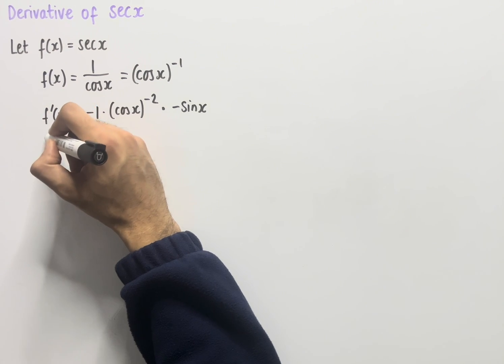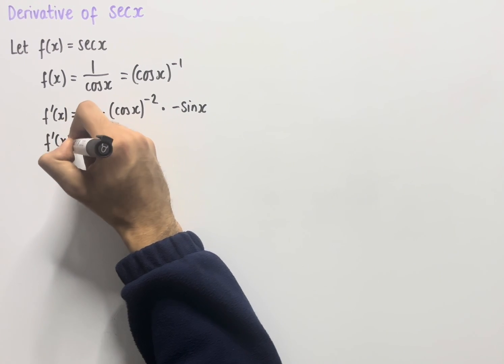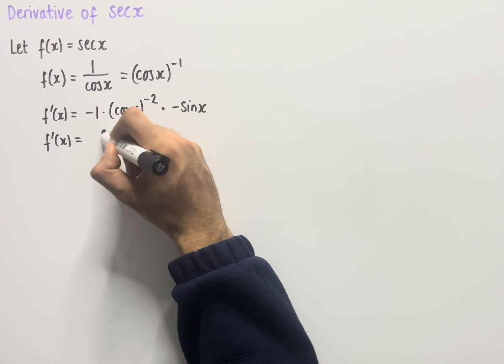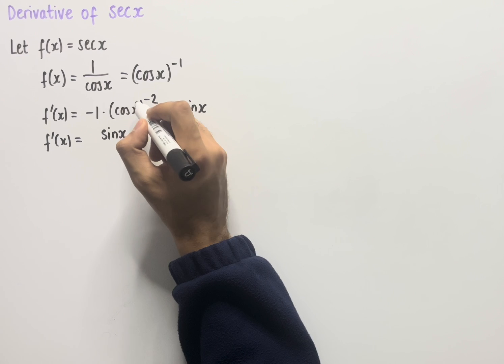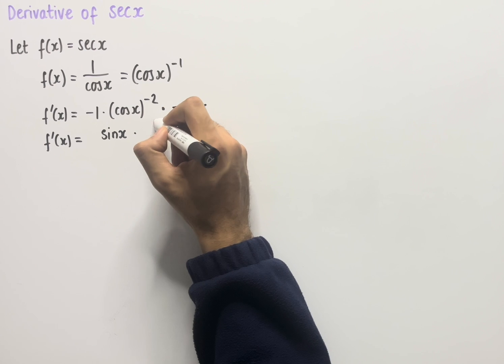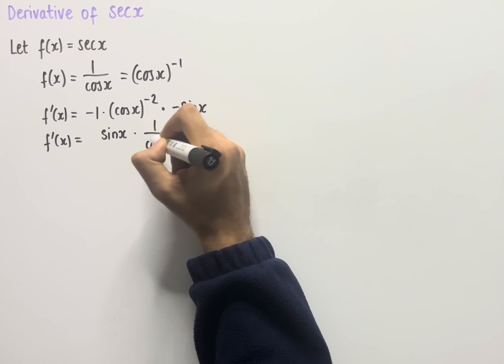If we simplify this, we get f'(x) which equals minus 1 times minus sin x, which is just sin x, and then we're multiplying this all by (cos x) to the power of minus 2, which is the same as 1 over (cos x) squared.